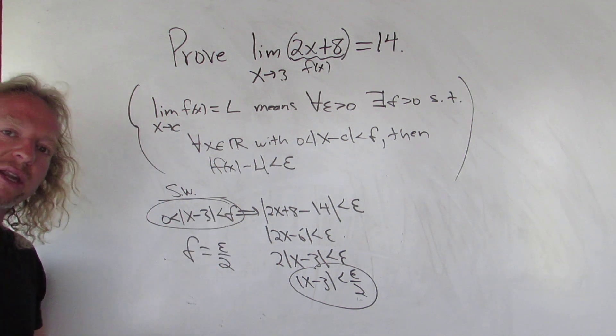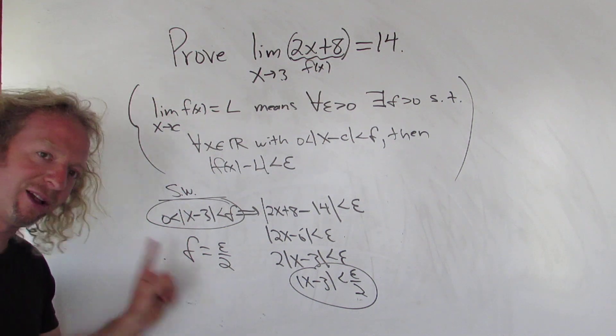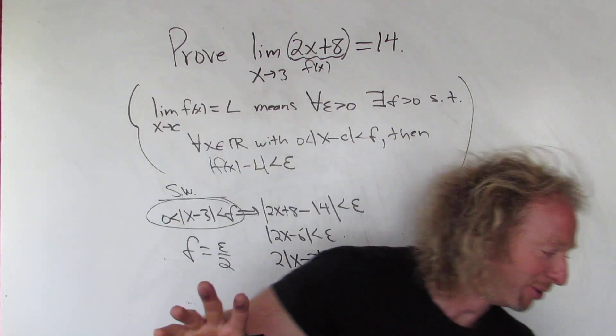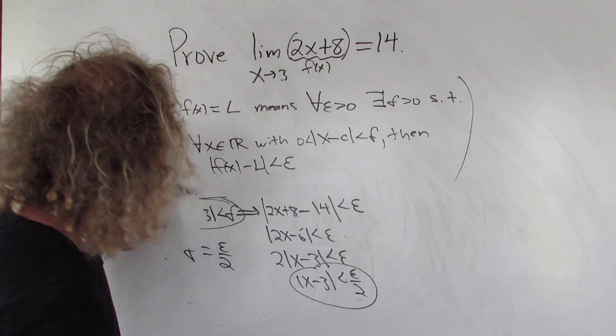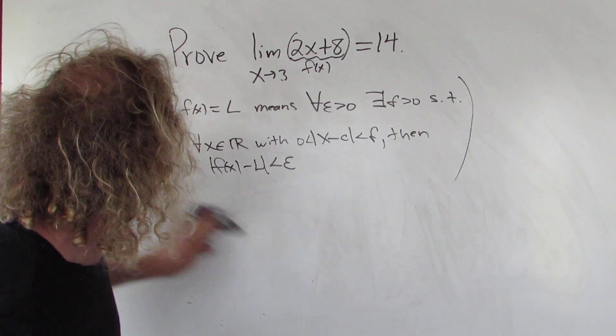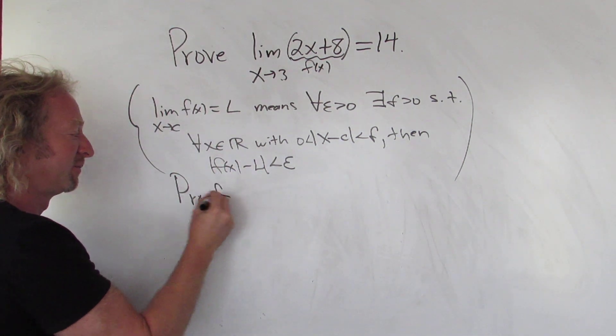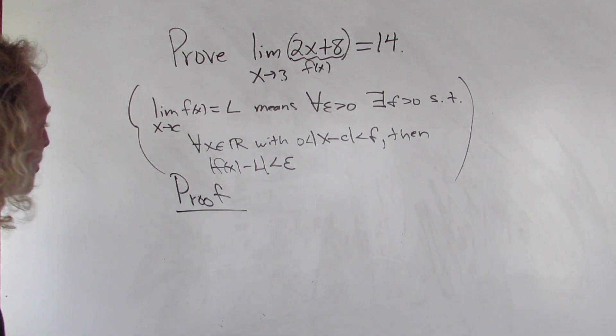I'm going to go ahead and erase this, and then now we'll go ahead and do the proof. So I've got to remember that delta is epsilon over 2, right? Hopefully this eraser works. Yeah, it's wet cloth. All right, so proof. That's actually wet paper towel. So proof.